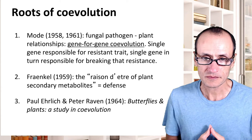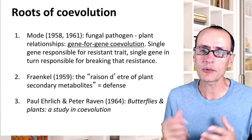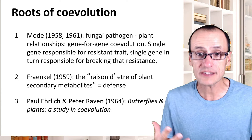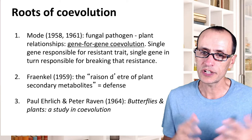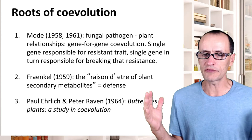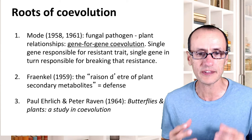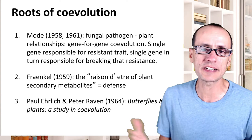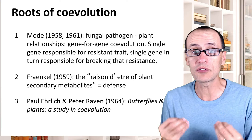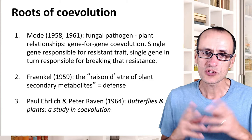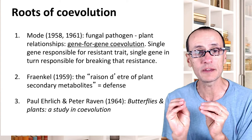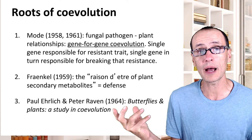These ideas were floating around as tools to study plants and their chemistry became more common. As you heard in a previous lecture, Gottfried Frankel, in trying to understand the diversity of chemistries within plants, proposed a hypothesis that said the reason for the existence of plants' secondary metabolites was not because they were waste products, but because they conferred defense against important selective agents like herbivores.